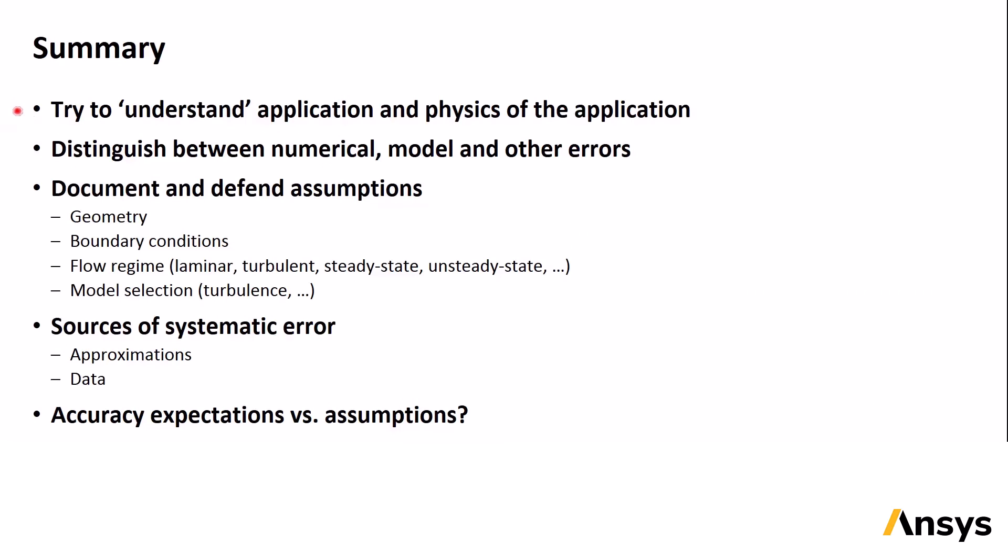In this presentation, we have discussed best practice guidelines for performing accurate CFD calculations. We have noted the value of engineering knowledge and understanding of the actual physical system. We have seen and discussed the different kinds of errors that can affect the solution. It is valuable to document and to be able to justify all aspects of your model, including assumptions about geometry, boundary conditions, flow regime, and physical model selection. Sources of systematic error have been noted, and these can include any approximations you make, such as where to locate the computational domain boundaries, or how to simplify the geometry, or any assumptions you make about data like boundary condition values and material properties. And finally, it's useful to remember that the accuracy expected from a simulation should generally not exceed the level of assumptions that were made in defining the simulation.